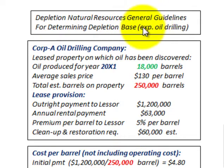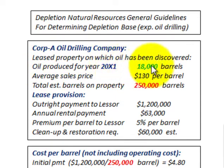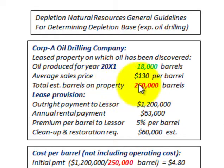We're going to go through a basic example for an oil drilling company. Corporation A is an oil drilling company that leases property on which oil has been discovered. The oil produced for the year 20X1 was 18,000 barrels. The average sales price for the year was $130 per barrel, and the total estimated barrels on this property is 250,000 barrels.